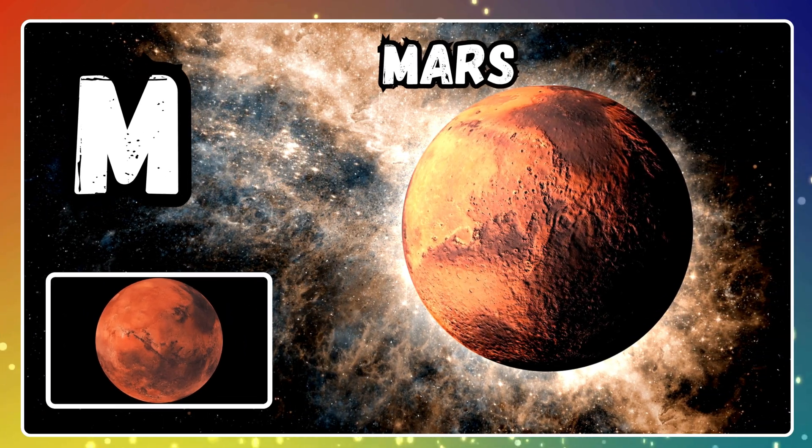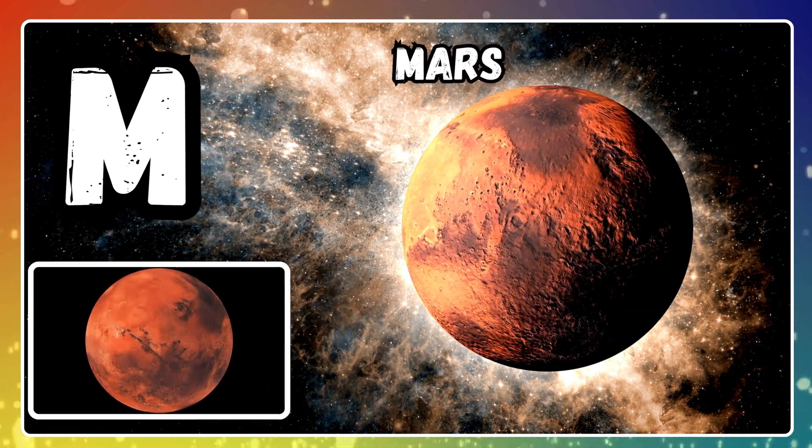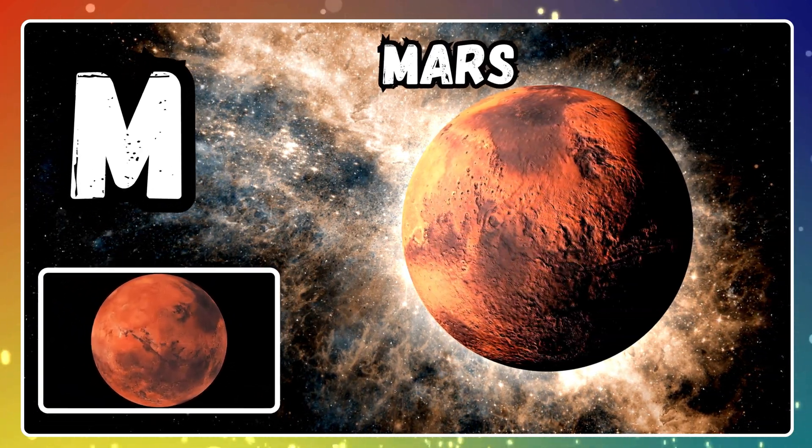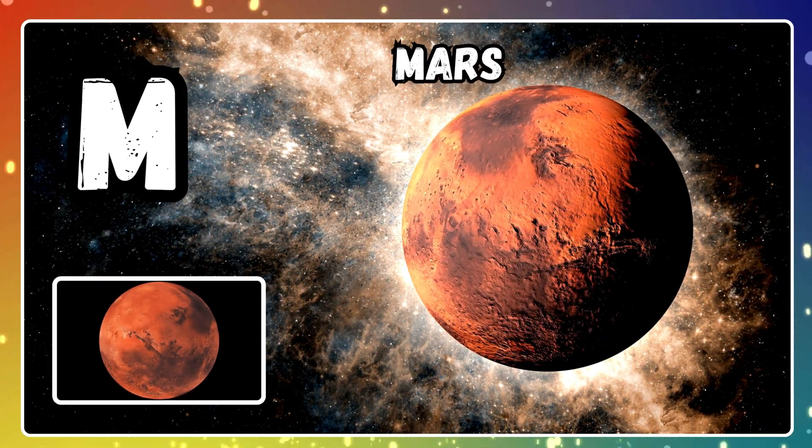M is for Mars. Mars is the red planet where robots roam.